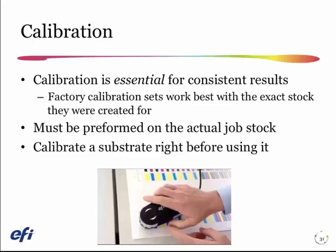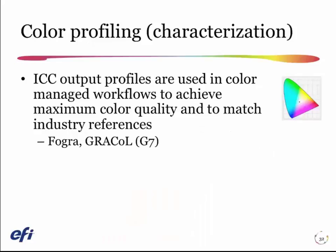The best practice is typically to calibrate a substrate right before you use it. I know this isn't always possible, but if you run three distinct paper types in your workflows and you come in in the morning and calibrate all three, but you don't use the third paper type until sometime after lunch, you're not going to get as good a result as if you put your jobs together. Calibrate coated, run as many of the coated jobs as you can, then calibrate uncoated, and maybe calibrate that third paper at two or three o'clock in the afternoon.